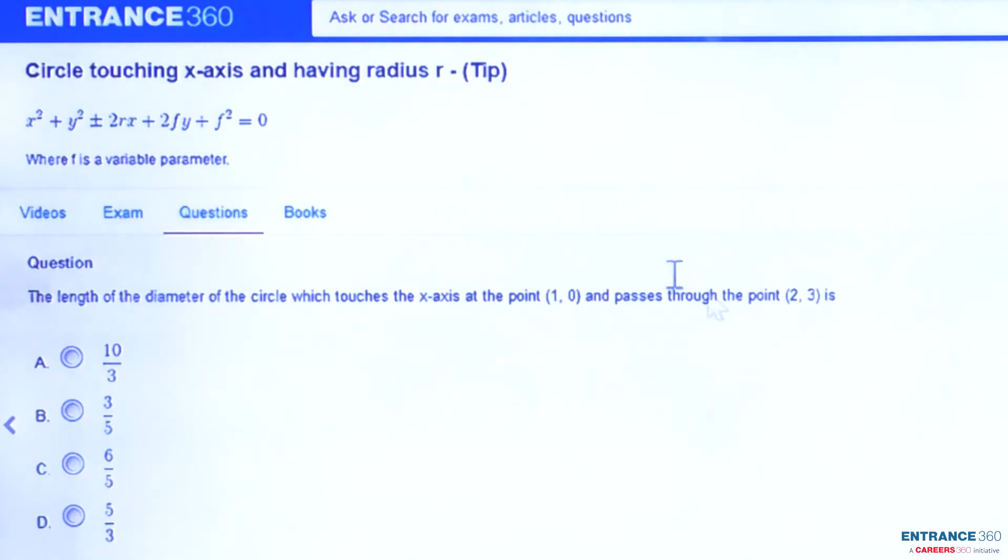Then 10/3 means option A is the right option. Option A is the correct option.